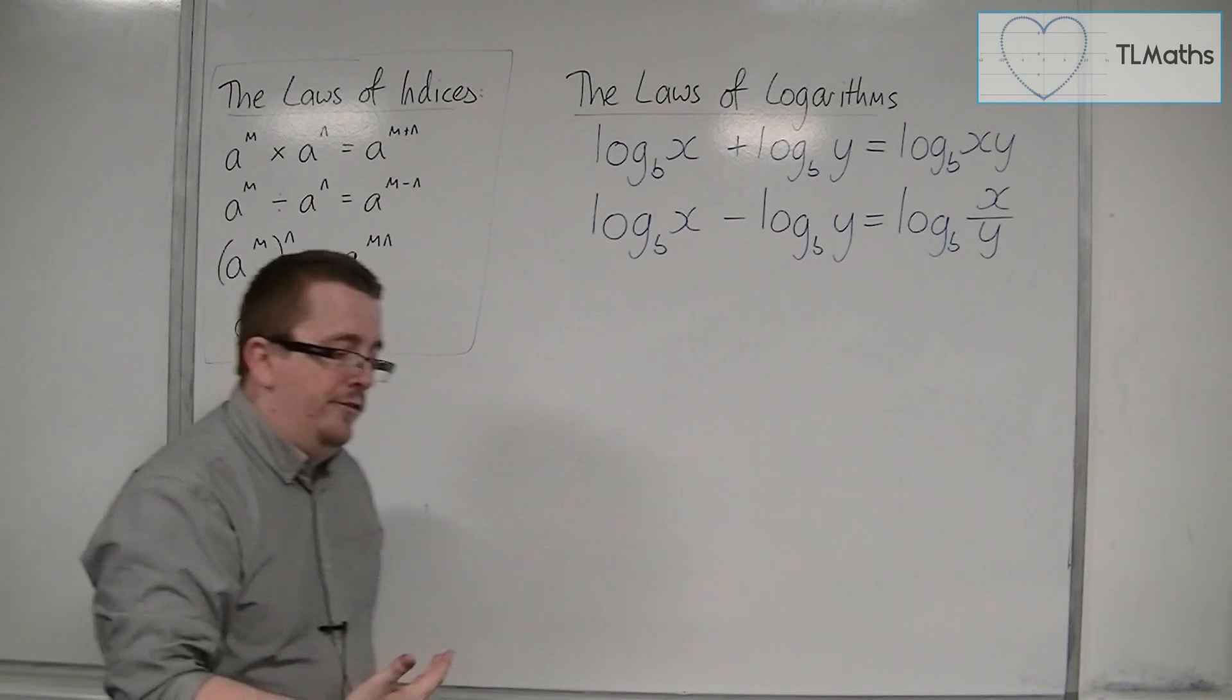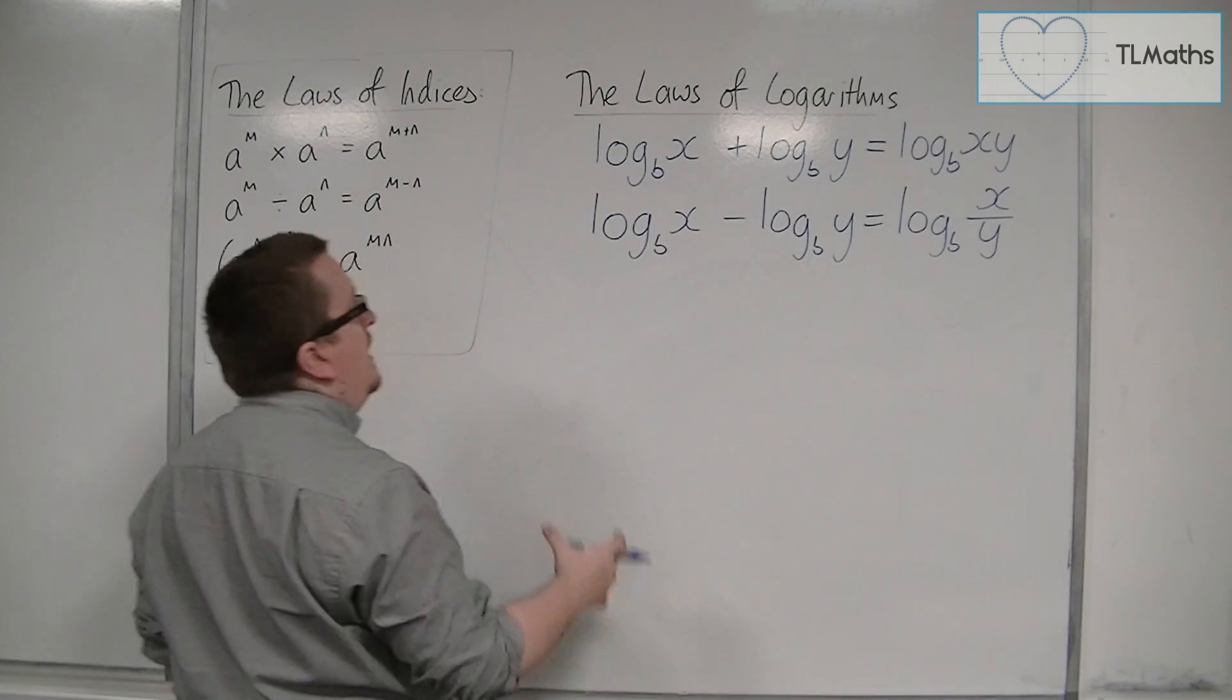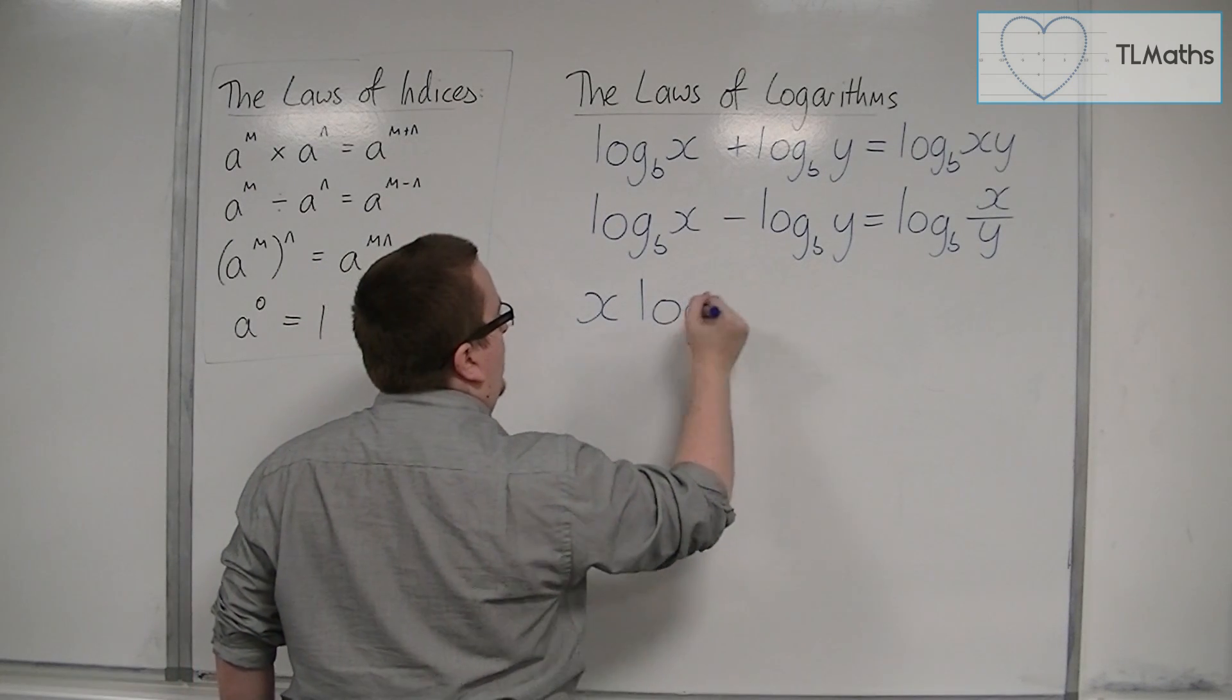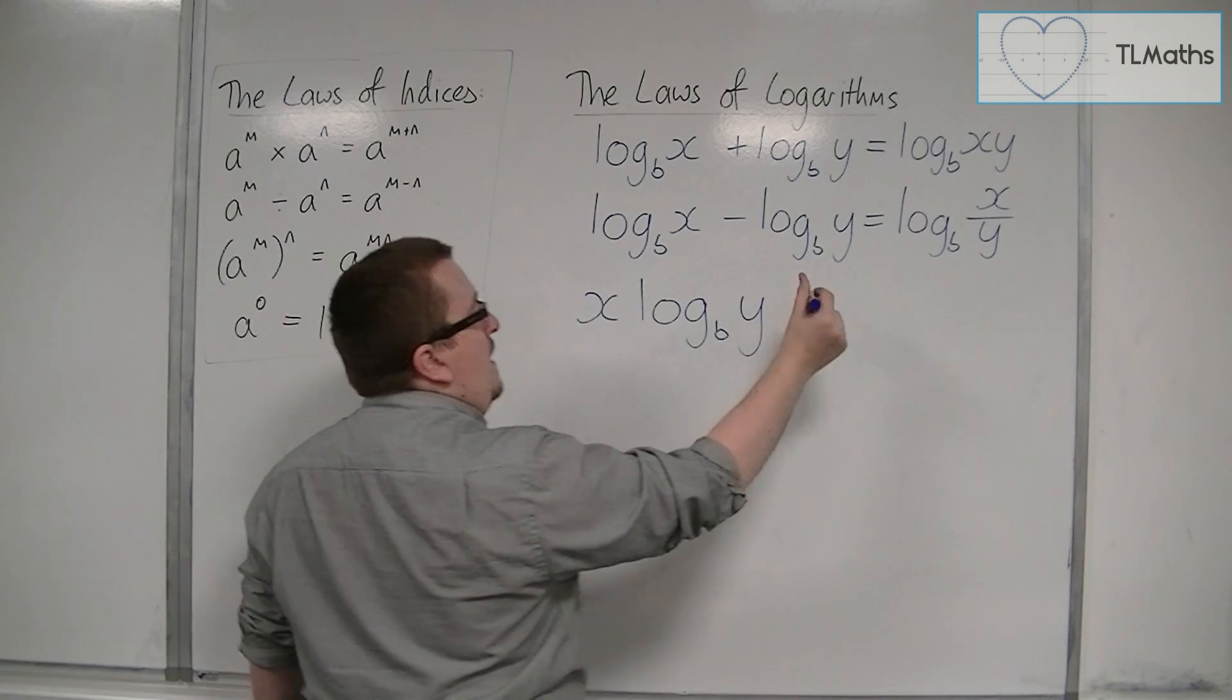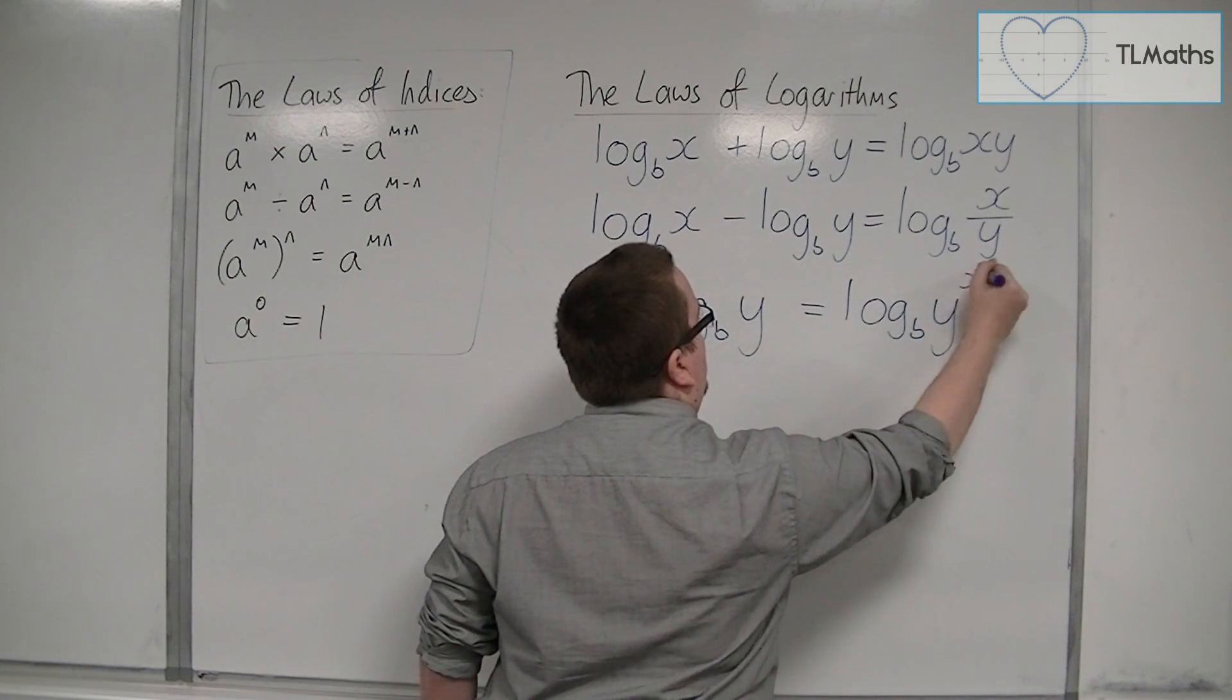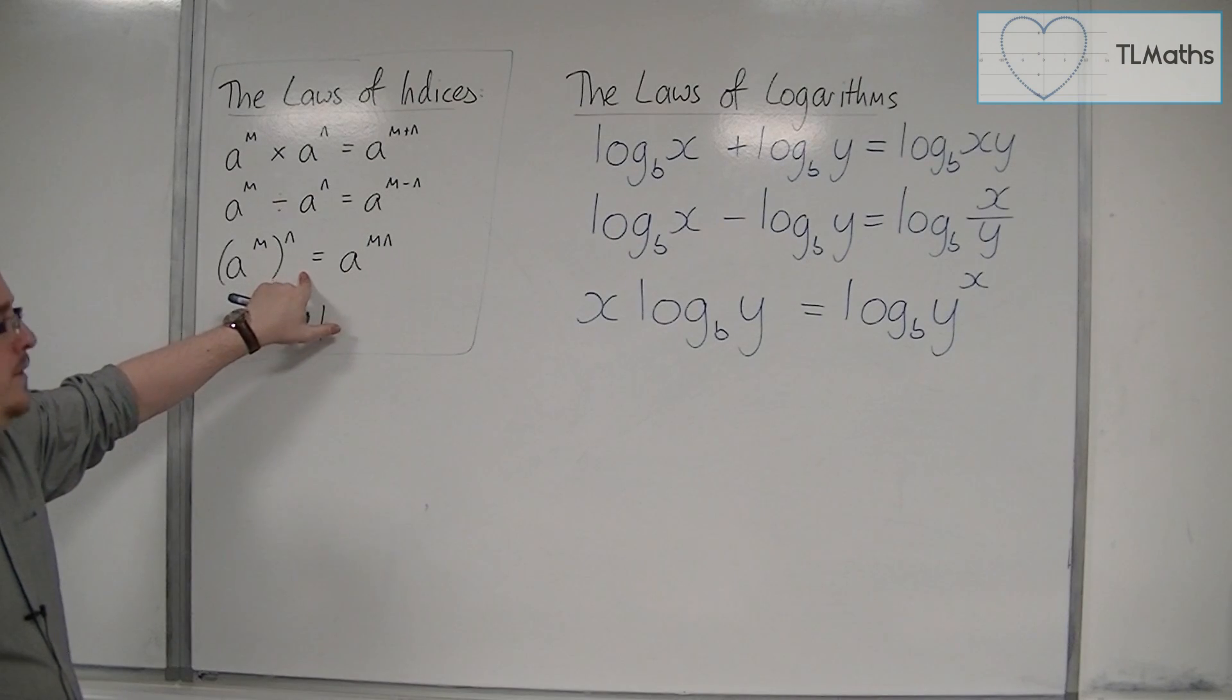We then have the third law of logarithms, where if you have x outside of a logarithm, x log base b of y, then this is log base b of y to the power of x. This is connected, although it looks strange, to this third law of indices here.